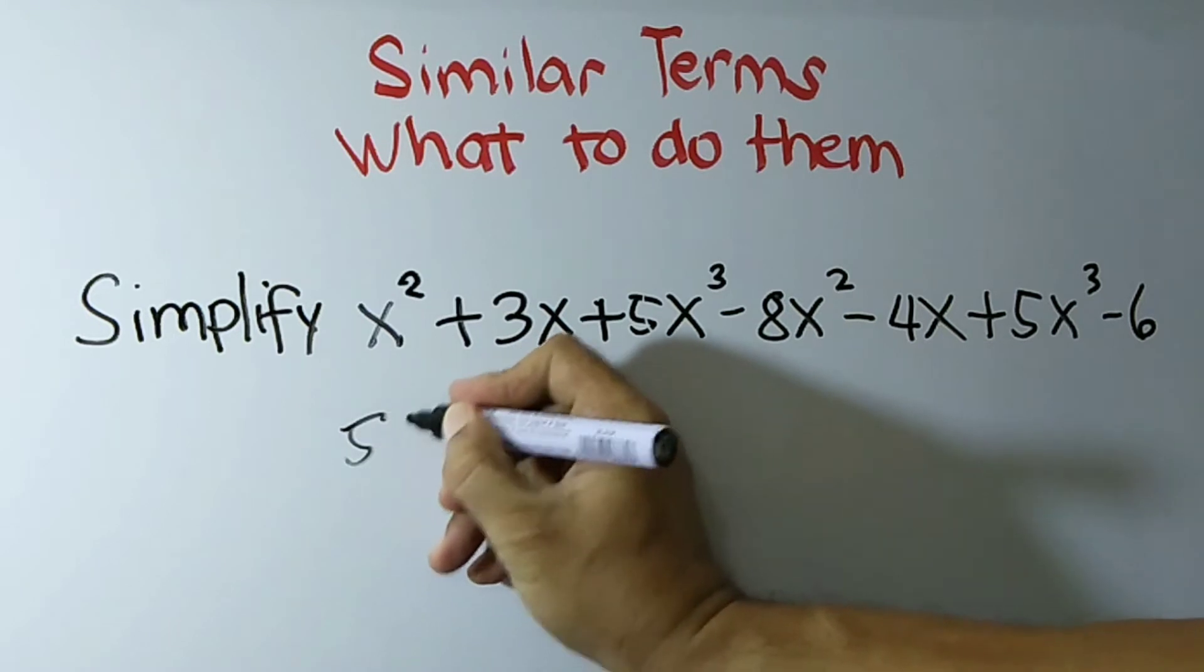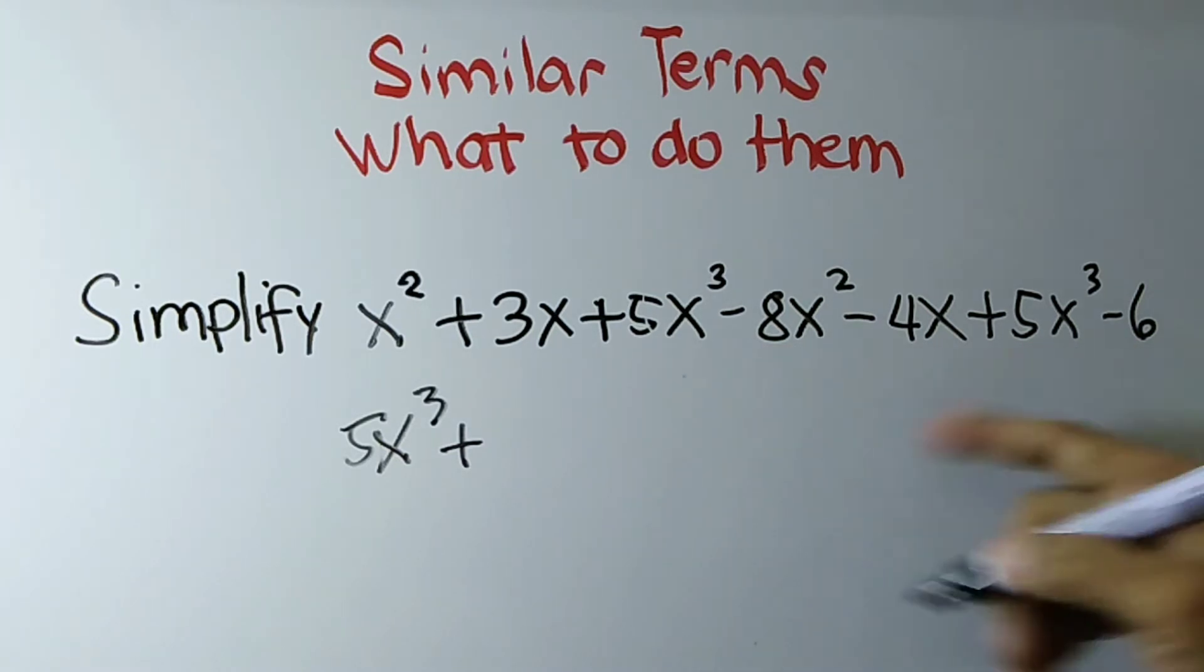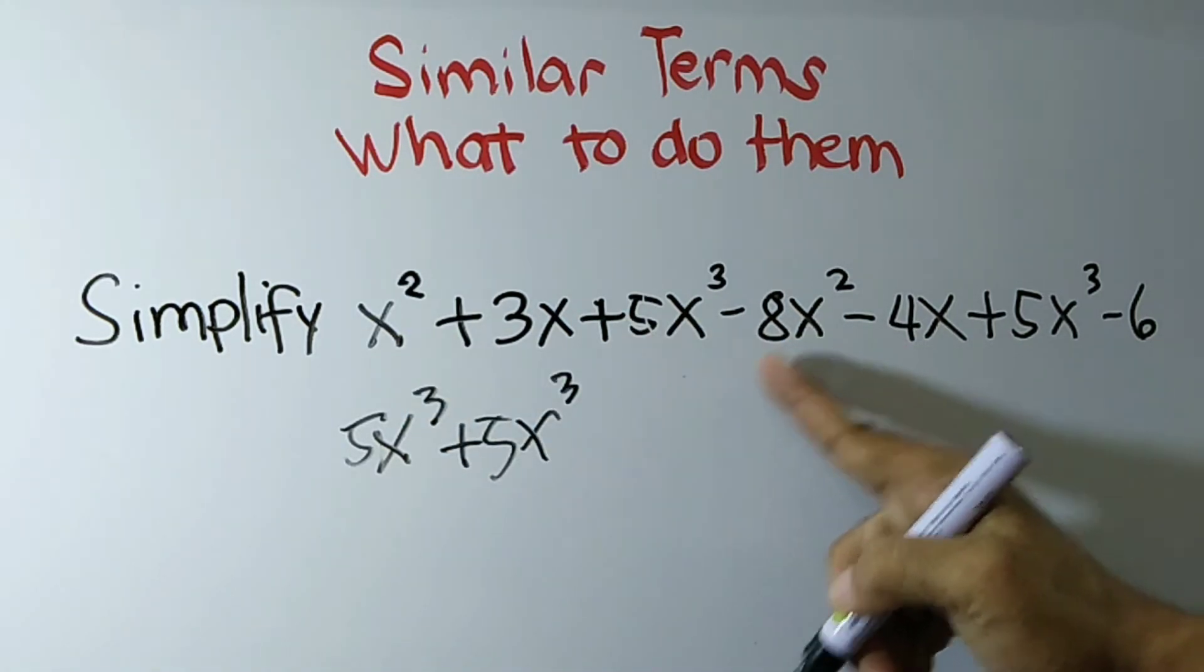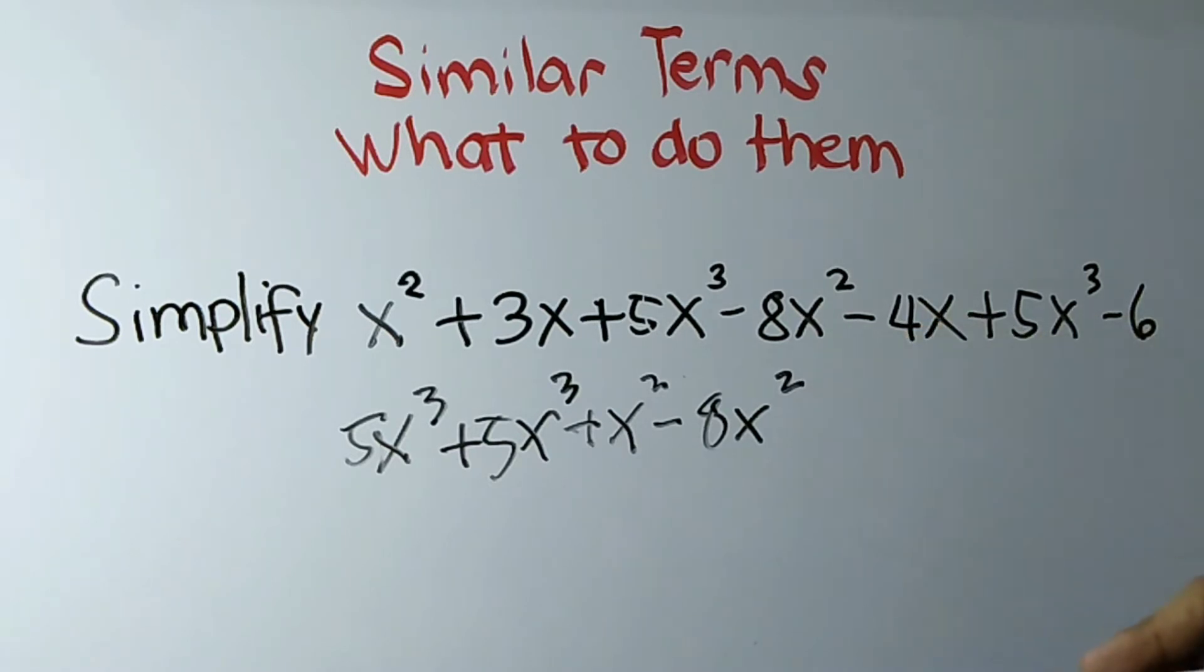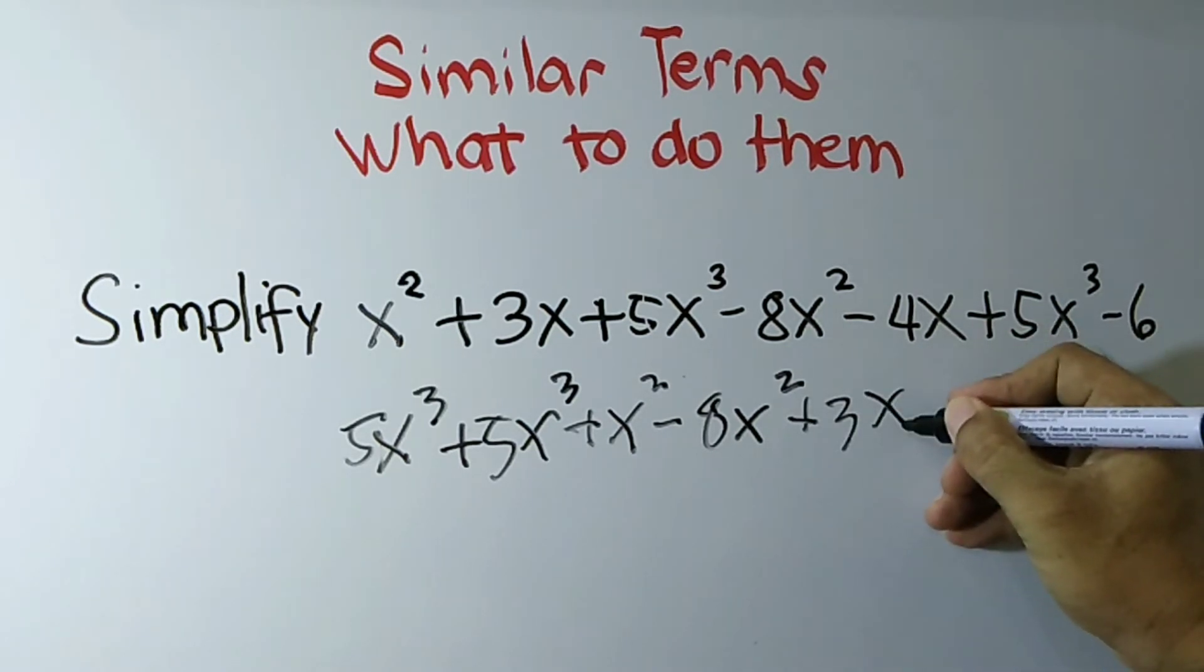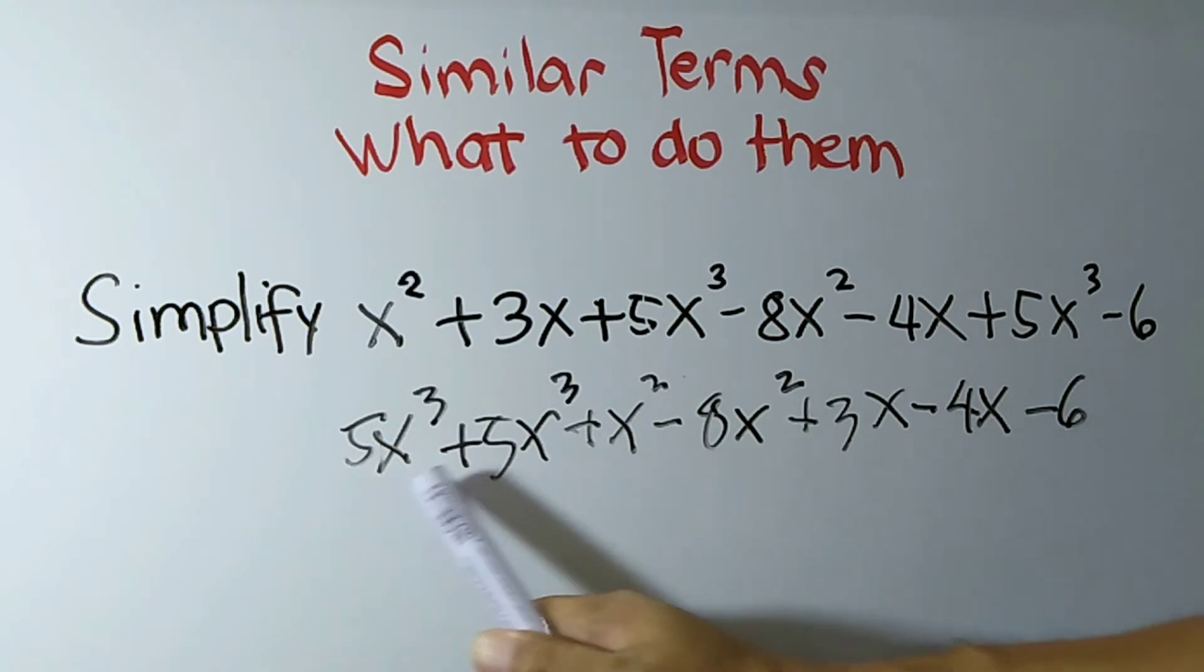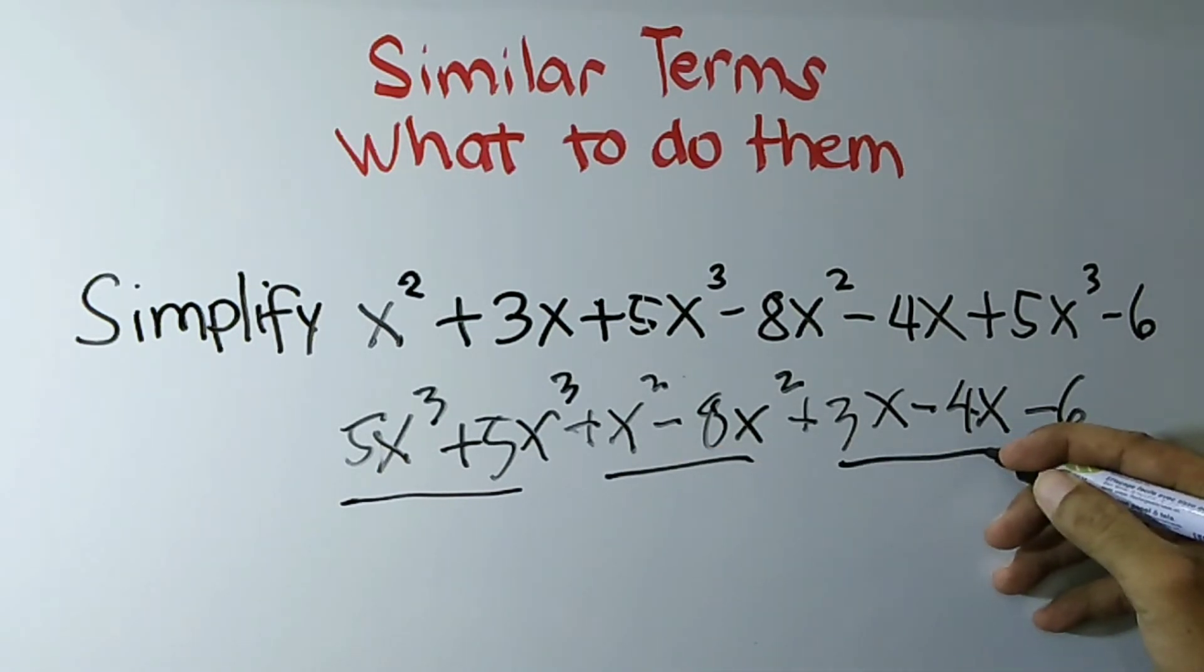So we have here 5x cubed plus this one, so we are done with this. Next, x squared and negative 8x squared we put here, so we have x squared, negative 8x squared. And next is this one and this one, so we have to write 3x, positive 3x, and negative 4x. Negative 6 and the last one is this negative 6. So we are able to put beside each other those terms that are similar.